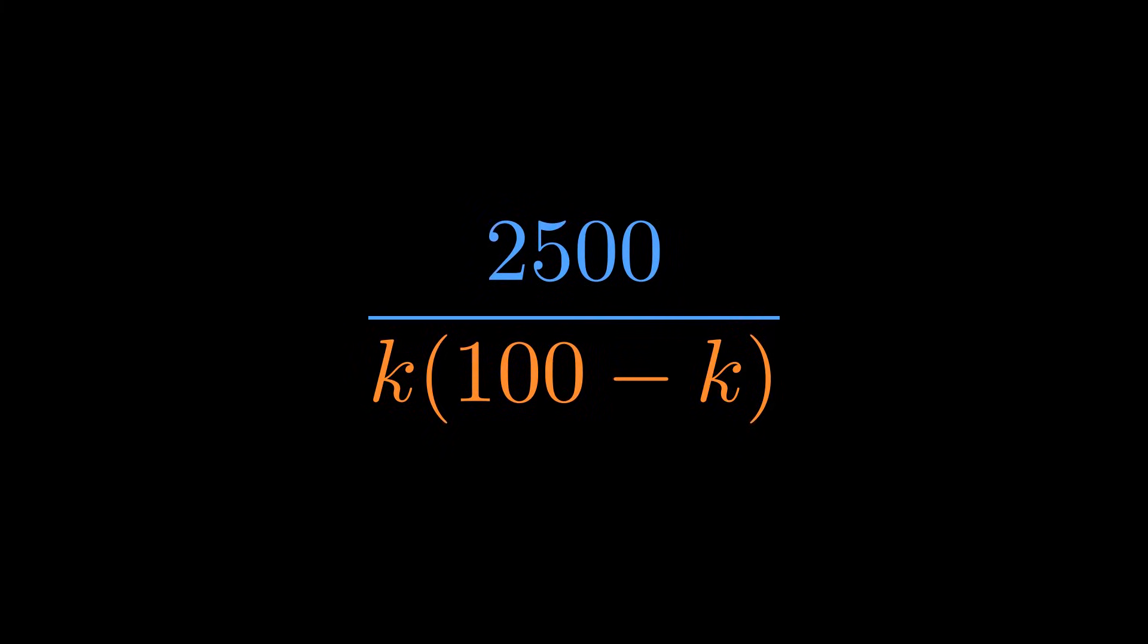Now here's the key question: for this fraction to be greater than one, the denominator has to be less than 2500. So let's find the maximum value this denominator can possibly reach for our range of k.